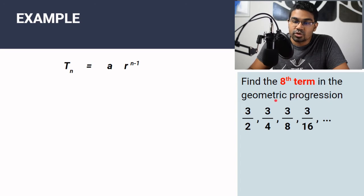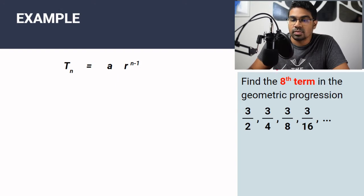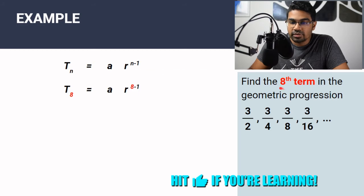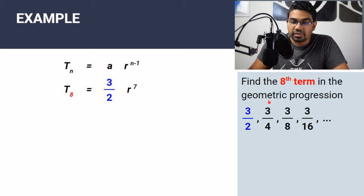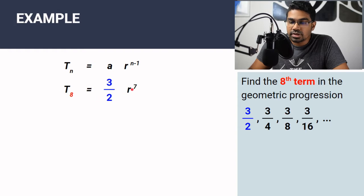Find the 8th term in the geometric progression. We are looking for the 8th term, so n equals 8, giving us T8 = A × R to the power of 8 minus 1. The first term A is given as 3 over 2, and 8 minus 1 equals 7.